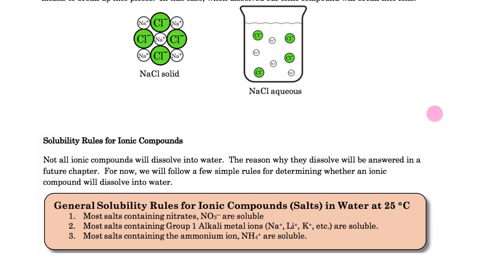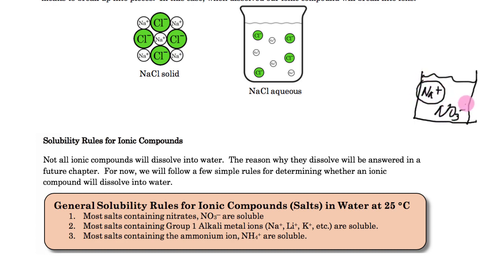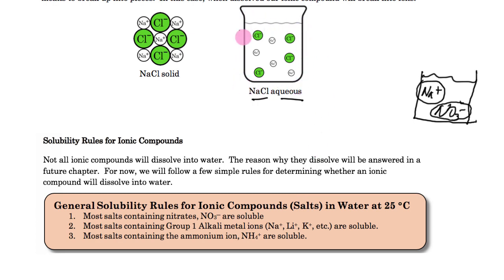For example, if I have sodium nitrate dissolved in water, I would have sodium ions and nitrate ions in the solution. Anything with nitrate will dissolve and dissociate into ions. If it has a sodium, lithium, potassium, or any other alkali metal, it will also dissociate into ions. The third class is ammonium — these are the compounds that will dissolve.